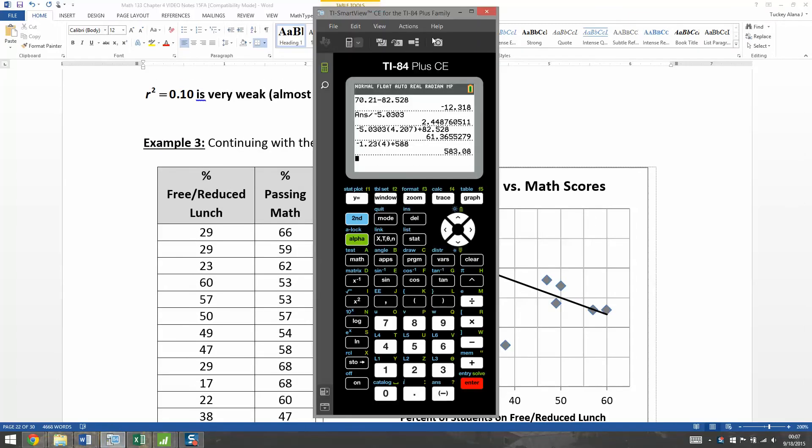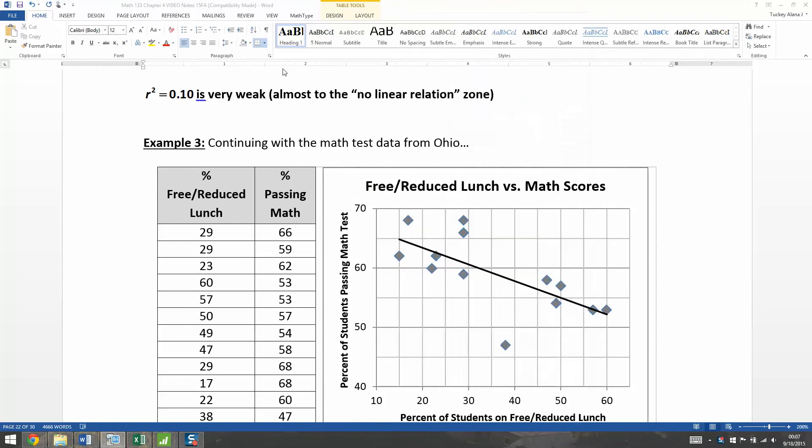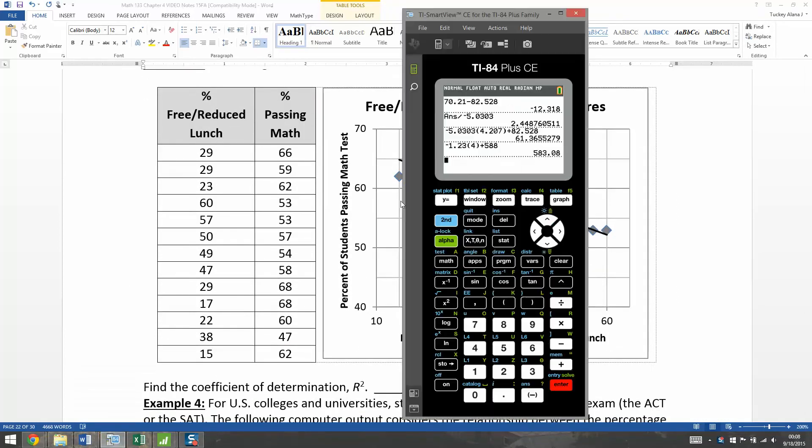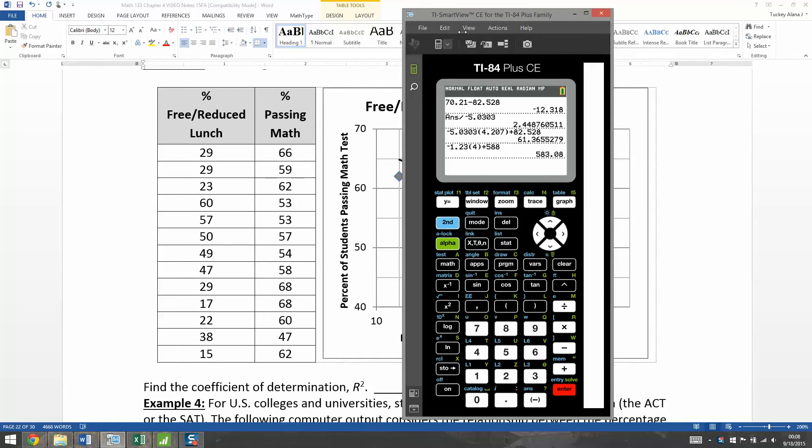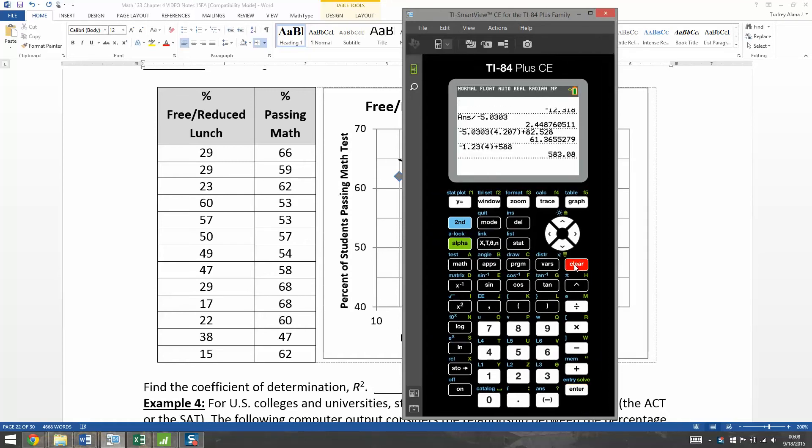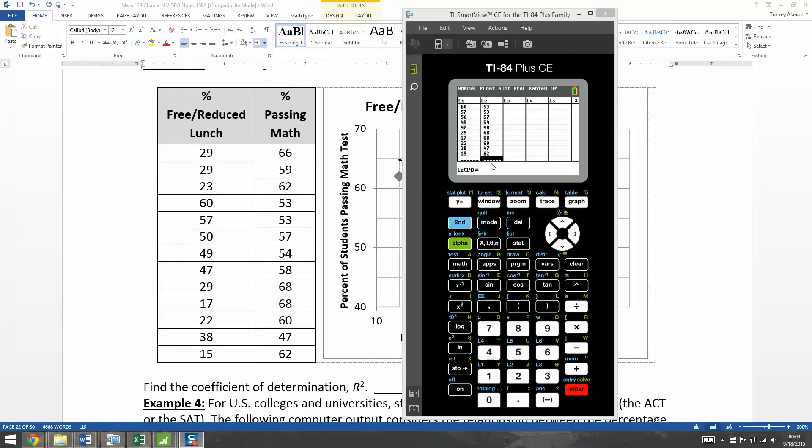So I'm going to grab my calculator. I'm going to go to stat, edit. I'm going to clear out my data right here, just clear the whole screen. Now stat number one, edit. I'm going to go up and press clear, enter because I don't want that data that was in there. And I'm going to pause and I'll be right back, but all I'm going to be doing is typing while I'm away.